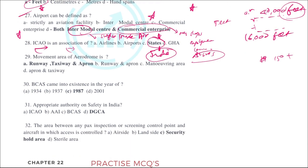The movement area consists of the runway, taxiway, and apron, as discussed in previous videos on understanding airports. The maneuvering area, on the other hand, is just runway plus taxiway — it does not include the apron.